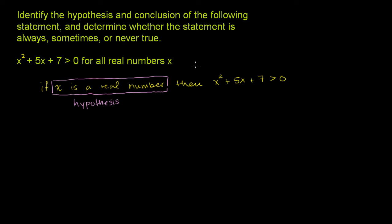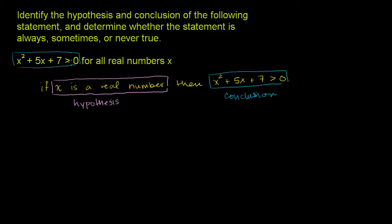The conclusion comes from the then part — it's the consequent. That right there is the conclusion: x squared plus 5x plus 7 is greater than 0. That is what you conclude if x is a real number. Either way you want to state it, it's always easier to write it as an if-then statement.